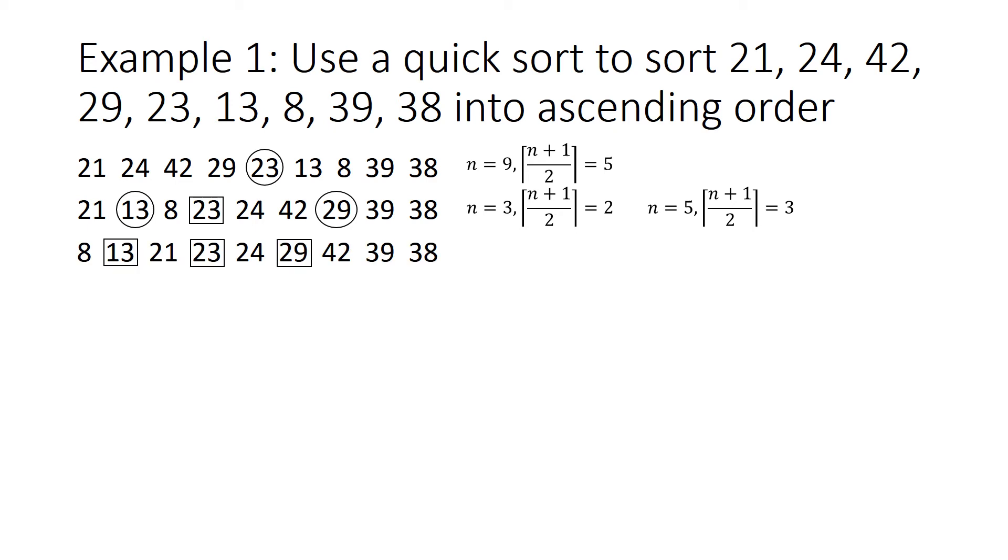So as you can see those sublists have been sorted yet again and now we are left with four sublists of size 1, 1, 1, and 3. So positions 1, 1, 1, and 2. So we're going to circle all of them.